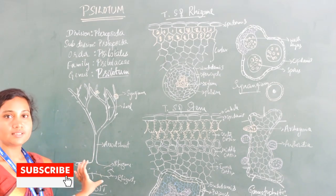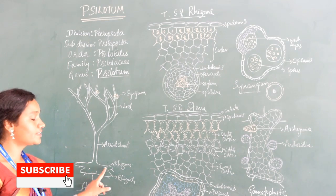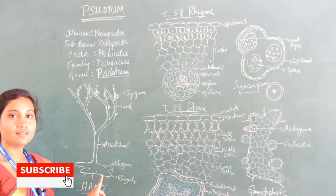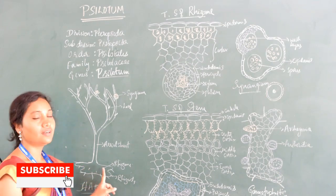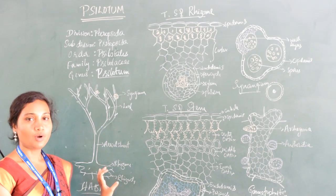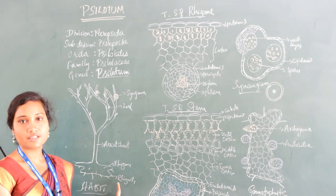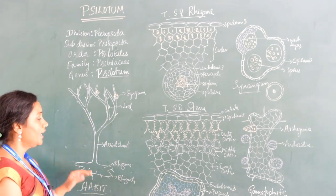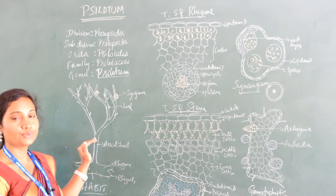The underground rhizome is brown in color and it shows dichotomous branching. It helps in the attachment of the plant body to the substratum. On the rhizome, there are small hair-like structures called rhizoids, which help in absorption of water molecules. From the rhizomatic part, the aerial shoot arises.